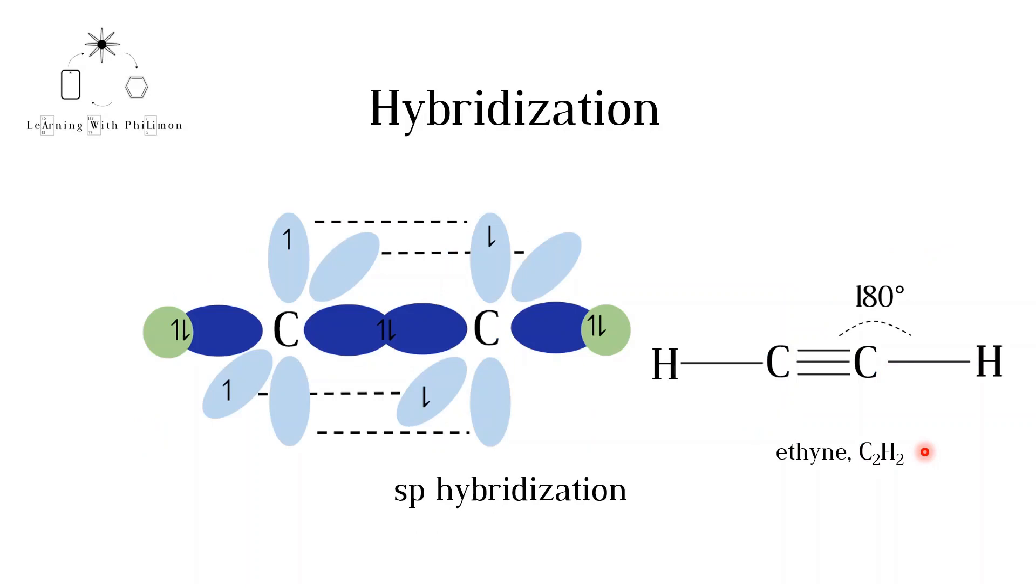This hybridization explains the bonding in ethyne, C2H2. The two sp hybrid orbitals are used to form a single bond to a hydrogen atom and one single bond to the carbon atom. The remaining p orbitals are used to form the double and triple bond. In this case there are two pi bonds. Note that the p orbitals are perpendicular to each other.